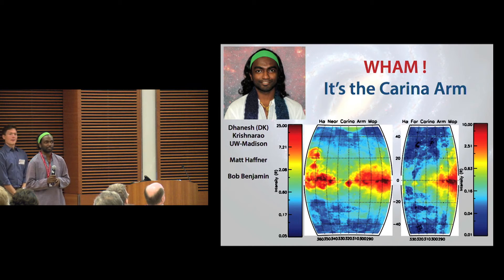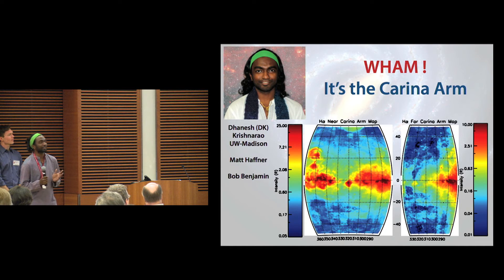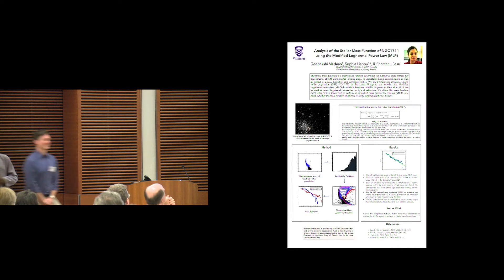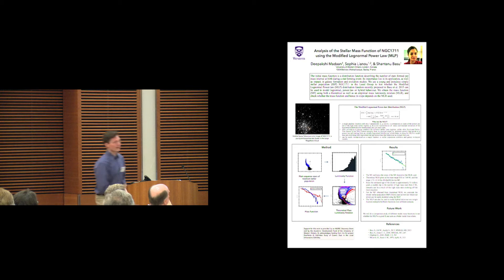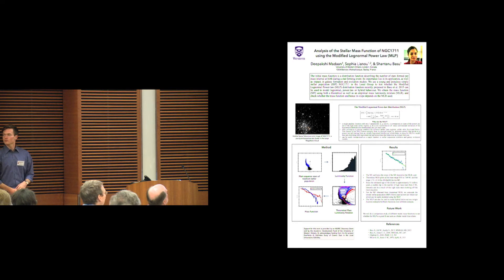I'm DK, a graduate student here at Madison. Come talk to me and I'll tell you all about the Carina arm as seen by WHAM, the Wisconsin H-Alpha Mapper. I'm going to discuss some of our early findings on the vertical structure of the warm ionized medium throughout the spiral arm. Come say hi — I'll be wearing a green headband.